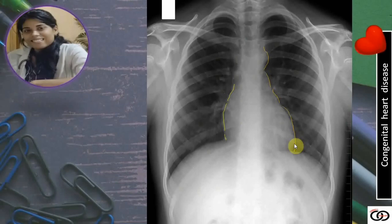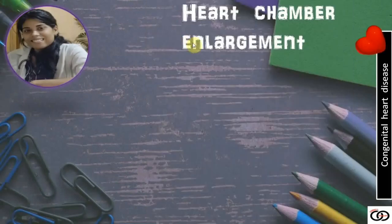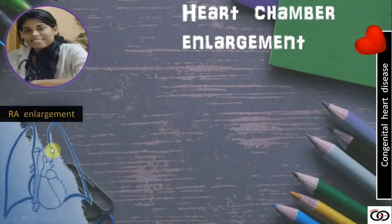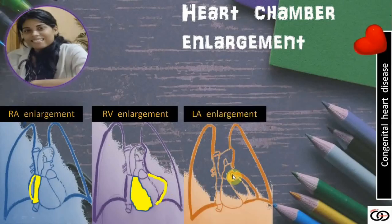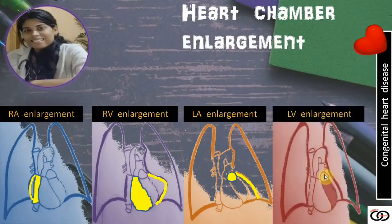After the normal anatomy, let's discuss what happens when a heart chamber enlarges. In right atrium enlargement, the right heart border enlarges projecting to the right of the spine. In right ventricular enlargement, the left side cardiac shadow enlarges causing the apex to turn upwards. In left atrium enlargement, it causes straightening of the left heart border from the aortic knuckle up to the apex, and we also find a double atrial shadow. In left ventricular enlargement, the left side cardiac shadow enlarges and the apex faces downwards and outwards.